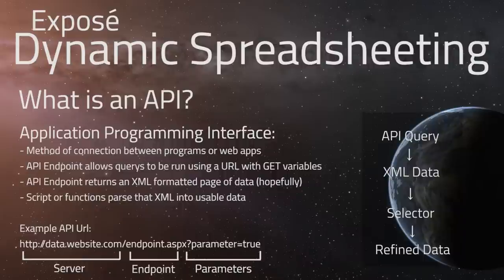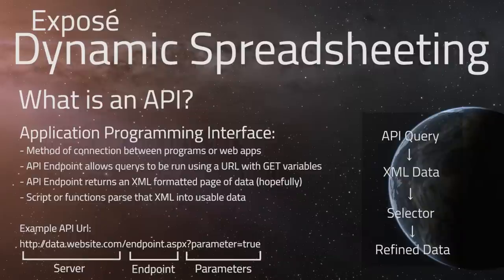Rather than going to a website, clicking on an item, or typing into a search box to find price data, the API lets us directly request price data or other data from a server such as EVE Online and get back information on that item, those prices, or whatever.